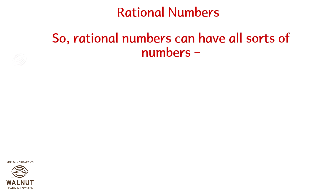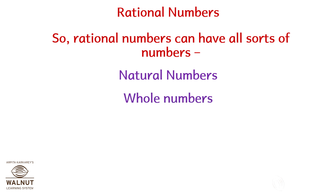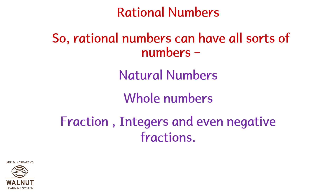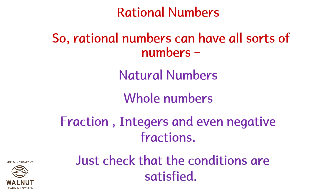Rational numbers can include all sorts of numbers: natural numbers, whole numbers, fractions, integers, and even negative fractions. Just check that the conditions are satisfied: number one, the numerator a and the denominator b should both be integers; number two, the denominator b should not be zero.